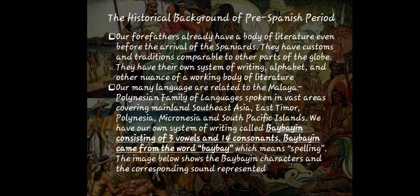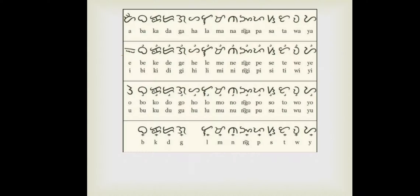Filipino at that time had its own literary pieces, and the earliest work included in those pieces is called Baybayin. Baybayin consists of three vowels and 14 consonants and pertains to the writings of the Filipino people — how Filipinos could communicate with others. They used Baybayin, which means spelling. Here are examples of Baybayin syllabary showing the characters and their corresponding sounds.